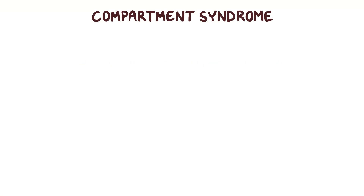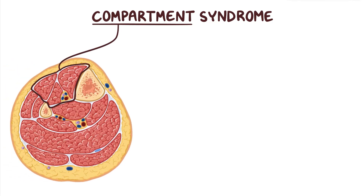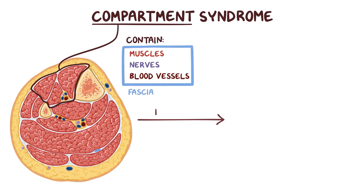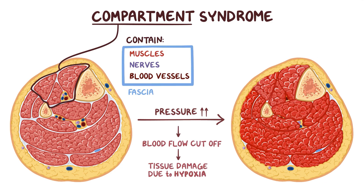With compartment syndrome, compartment refers to separate sections of the body that contain muscles, nerves, and blood vessels surrounded by a layer of fibrous connective tissue. When the pressure within these compartments rises, normal blood flow can be cut off, leading to tissue damage due to hypoxia, or the lack of oxygen.